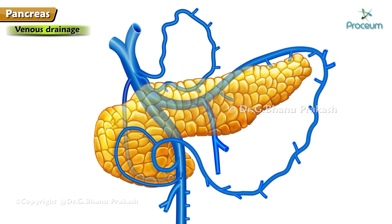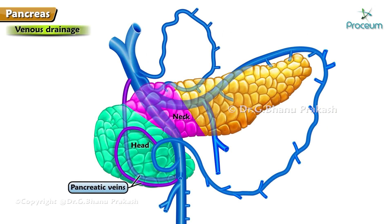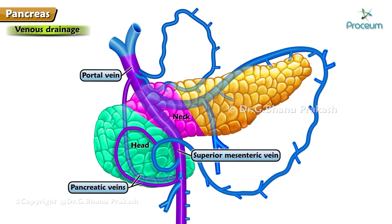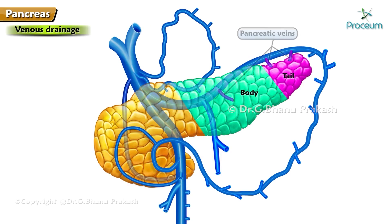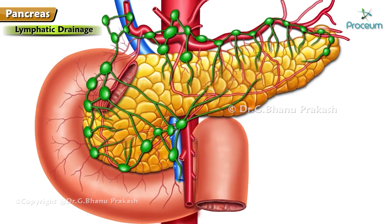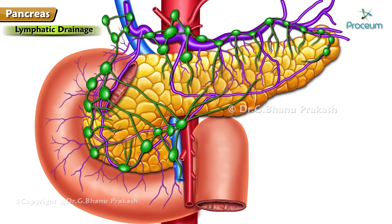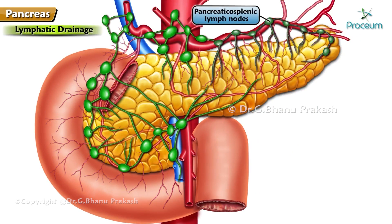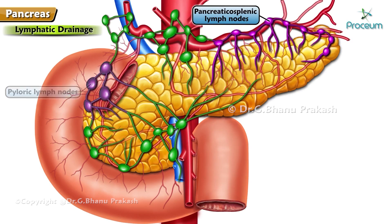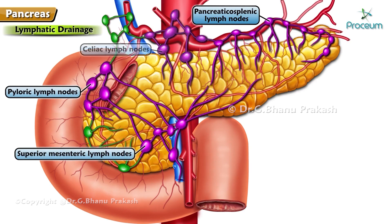Venous drainage: head and neck — pancreatic veins drain to the superior mesenteric vein, then to the portal vein. Body and tail — pancreatic veins drain to the splenic vein, then to the portal vein. Lymphatic drainage: pancreatic lymphatic vessels follow the arteries. Most vessels end in the pancreaticosplenic lymph nodes along the splenic artery; some end in the pyloric lymph nodes. Efferent vessels from these nodes drain to the superior mesenteric or celiac lymph nodes.